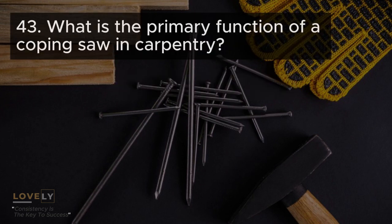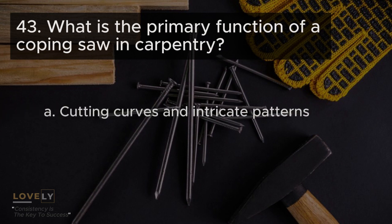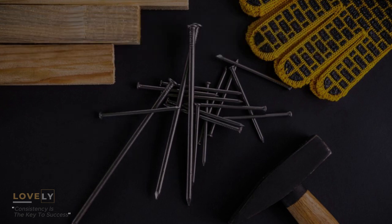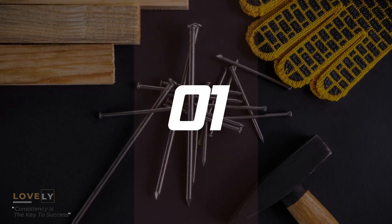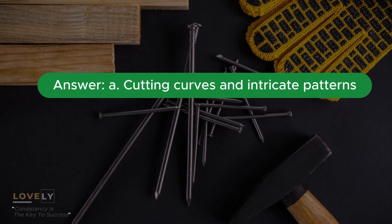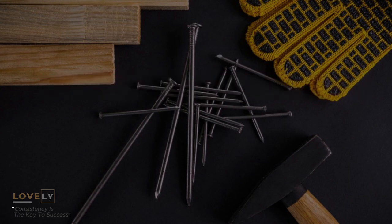Question 43: What is the primary function of a coping saw in carpentry? A. Cutting curves and intricate patterns B. Making straight cuts C. Drilling holes D. Sanding surfaces. Answer A. Cutting curves and intricate patterns.